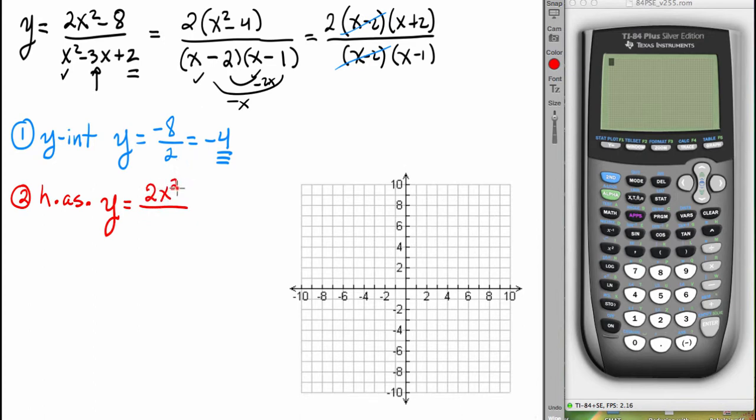And so for the numerator, the highest order term is 2x squared. The denominator, the highest order term is x squared. They each are of the same degree, so that when we simplify, we end up with y equals 2. That is going to be the horizontal asymptote. So I'll put that over in the sketch right there, y equals 2.